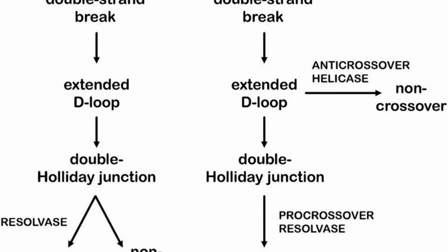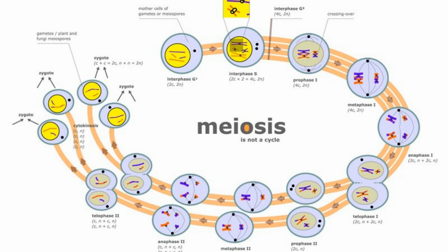Difference between mitosis and meiosis. The process of cell division serves to multiply cells. It involves the distribution of identical genetic material to two daughter cells. The genetic material is passed on to the next generation without any errors.